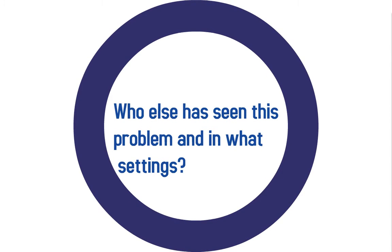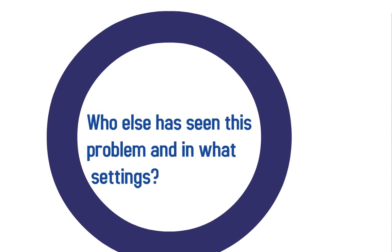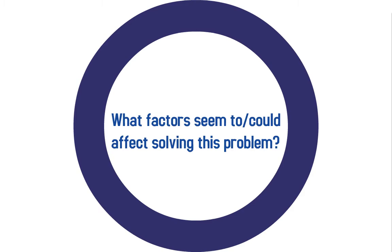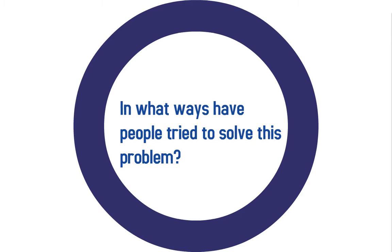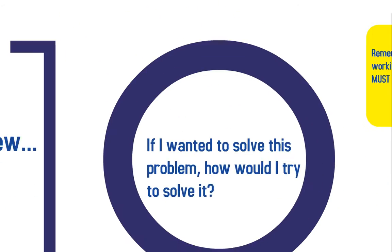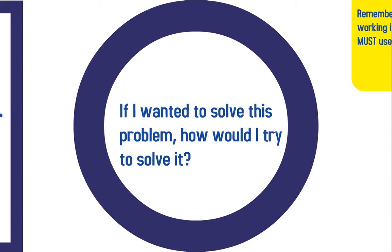The next questions are based on your literature review. Ask yourself: who else has seen this problem? What other researchers are writing about this, and in what settings are they seeing it? What factors seem to or could affect solving this problem? Look directly to the literature for that — what does scholarly research say is affecting this problem? And what ways have people already tried to solve or address it?